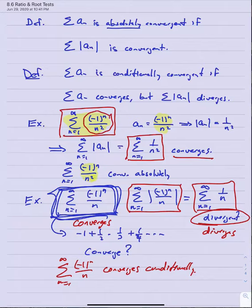The original series (-1)^n over n converges, but the series of absolute values diverges. Therefore, the series n equals one to infinity of (-1)^n over n converges conditionally. So: if the series of absolute values forms a convergent series, we call the original absolutely convergent. If that series of absolute values diverges but the original series converges, then it converges conditionally.